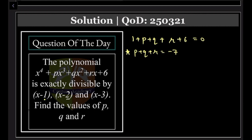You get 16 + 8P + 4Q + 2R + 6 = 0, right? Taking 22 to that side and also 2 common, so I will have 4P + 2Q + R = -11. That's our equation number 2.